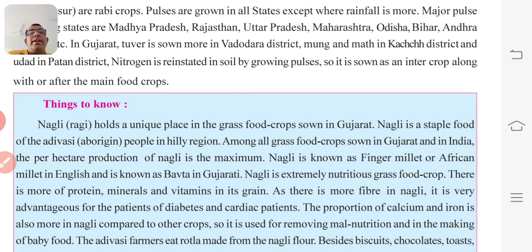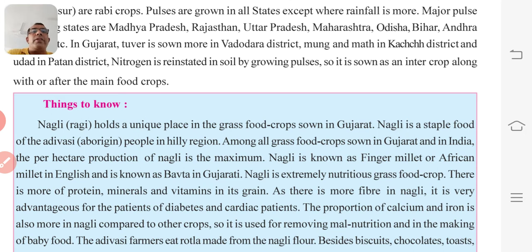In English it is known as African millet, and in Gujarati it is called Bauta. Nagali is an extremely nutritious grass food crop. There is more protein, minerals, and vitamins in its grain. As there is more fiber in Nagali, it is very advantageous for patients of diabetes and cardiac patients.